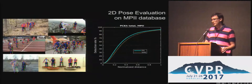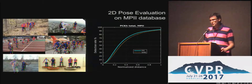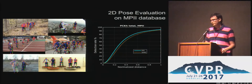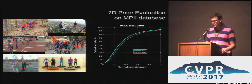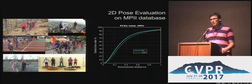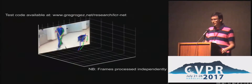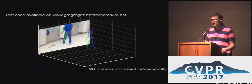We also evaluated 2D pose estimation error in the wild using the MPI database, which presents a wide variety of scenes with multiple persons. Notably, you can see in the plot that the pose proposal integration actually performs better than regular non-max suppression. We also show some additional qualitative results.